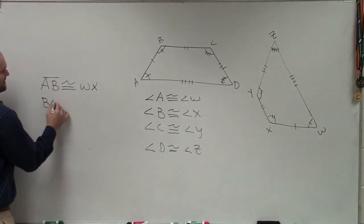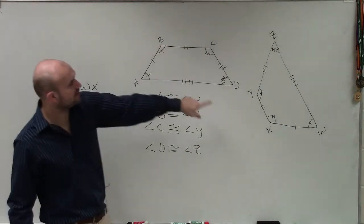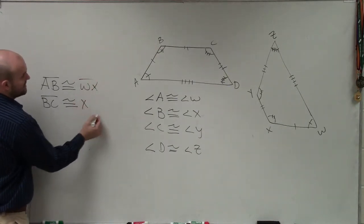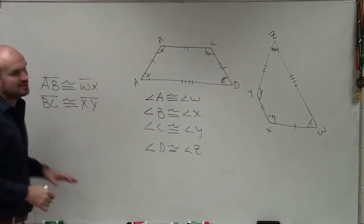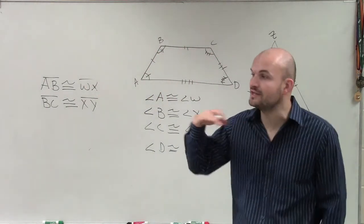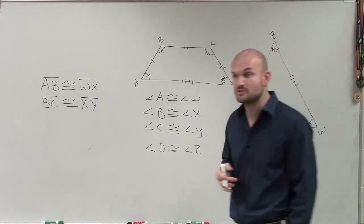Next side length is BC is congruent. Again, we'll start with what is corresponding with B, which is X. So that's going to be XY. Notice how for my angles, I have the nice little angle system. And for the side lengths, I have the nice line segment above them. That's the way I can differentiate between what I'm talking about.